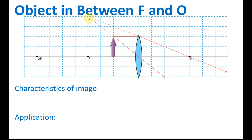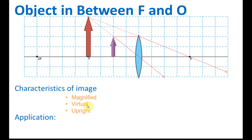We extend the light rays to see where they converge — that gives us the position of the image. Since the light rays come from the tip of the arrow, this will also be the tip of the arrow in the image. The image formed is magnified — meaning bigger. It is virtual, because it is on the same side as the object. It is also upright. This case is used in a magnifying glass, where we put the object between O and F.